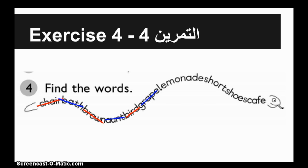Crepe: 7, 9, 10. Lemonade: 2, 3, 4, 7, 9, 10. Short: 9, 10.